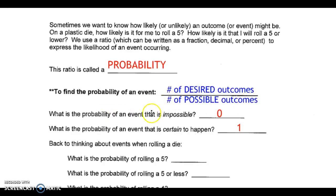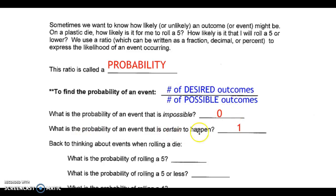The probability of an event that is impossible is zero, because if it's impossible, the desired outcomes can't happen — there are no desired outcomes. Similarly, the probability of an event that is certain to happen is one, because the desired outcomes are every possible outcome.